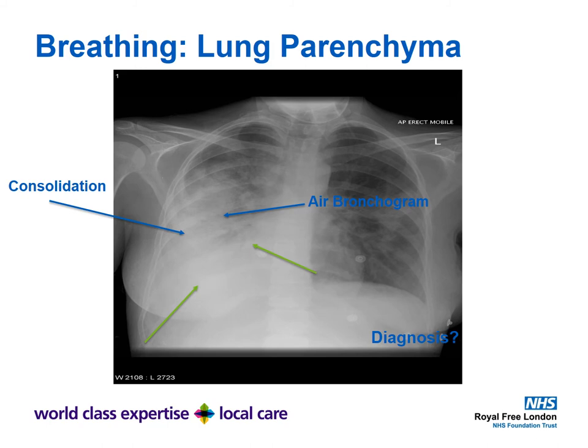Looking at the parenchyma — B for Breathing — you can see consolidated lung. The green arrows point to the rib above and where the diaphragm ordinarily would be. The consolidation looks like a radiological cloud. Tracking your eyes upward from the consolidation you'll see black patches between the clouds — these are air bronchograms, reflecting air passages between pus-filled alveolar sacs. This is a classical example of pneumonia.